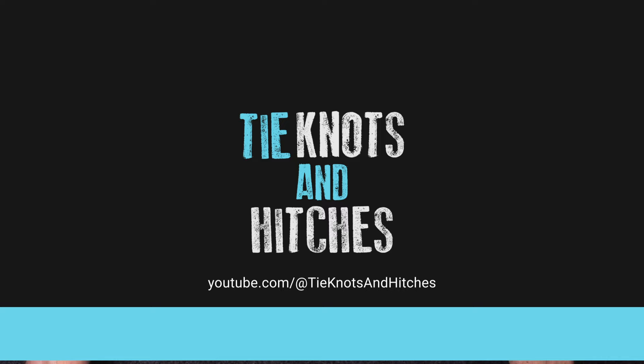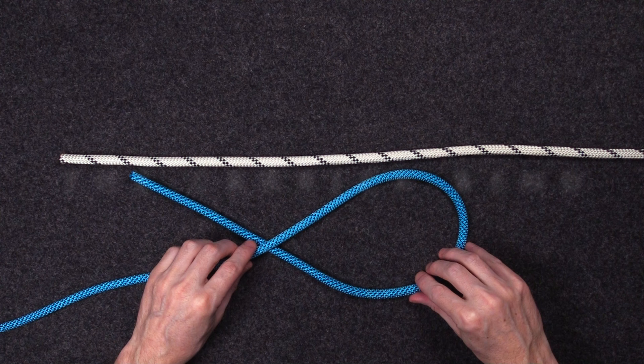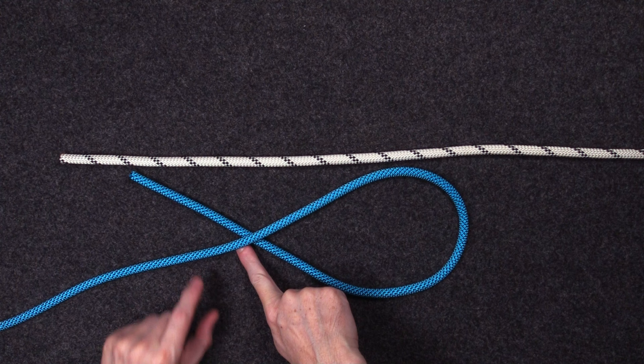To start a Carrick Bend, take one of your ropes, turn it around into a loop, and create an underhand crossing point so that its working end passes under the standing part.